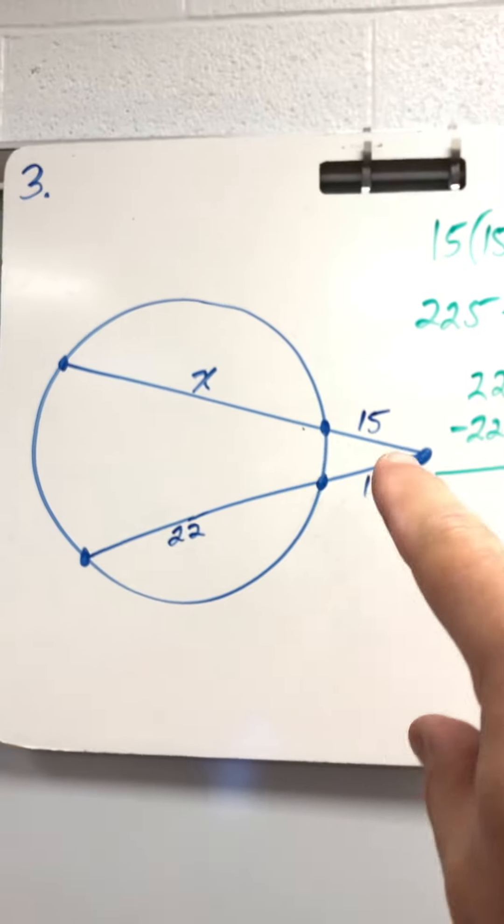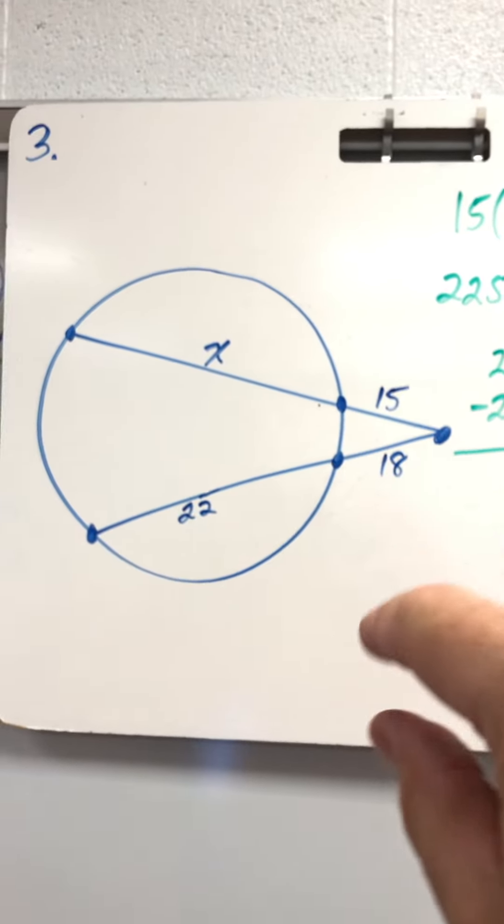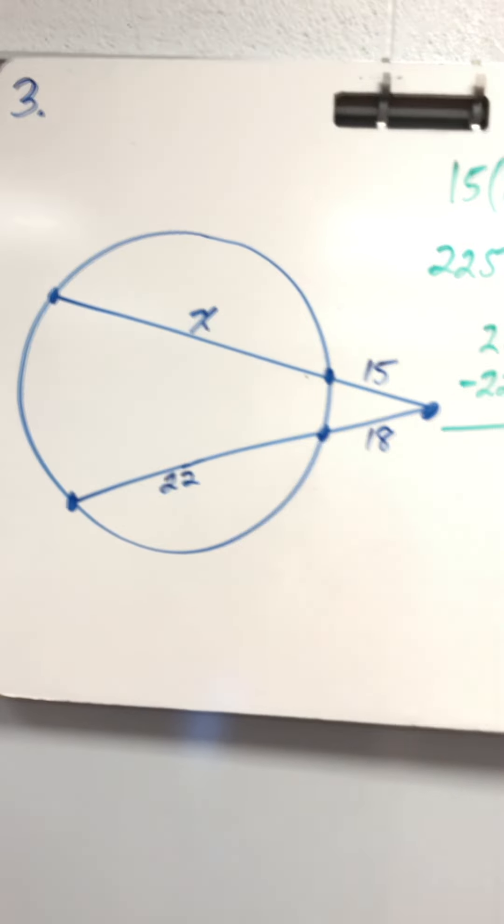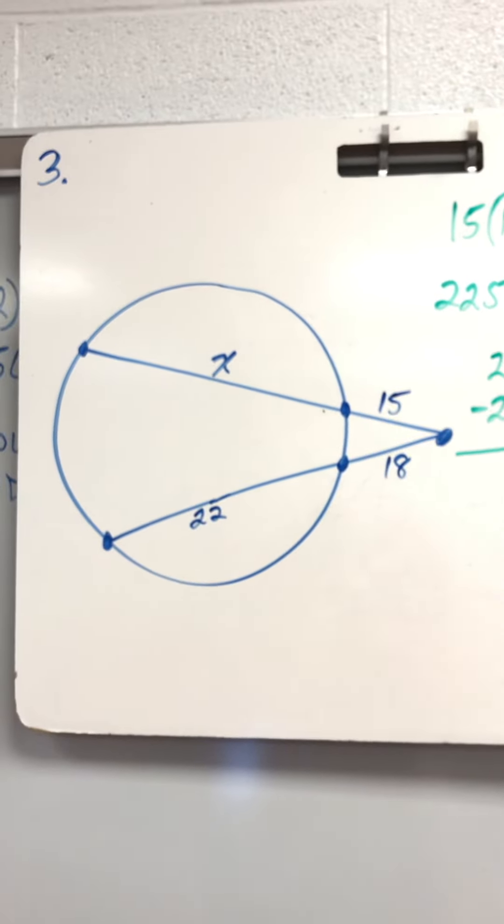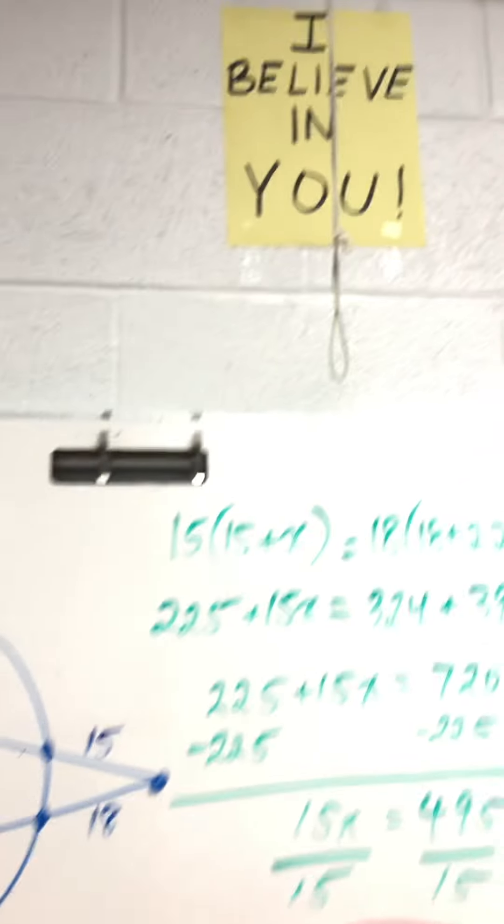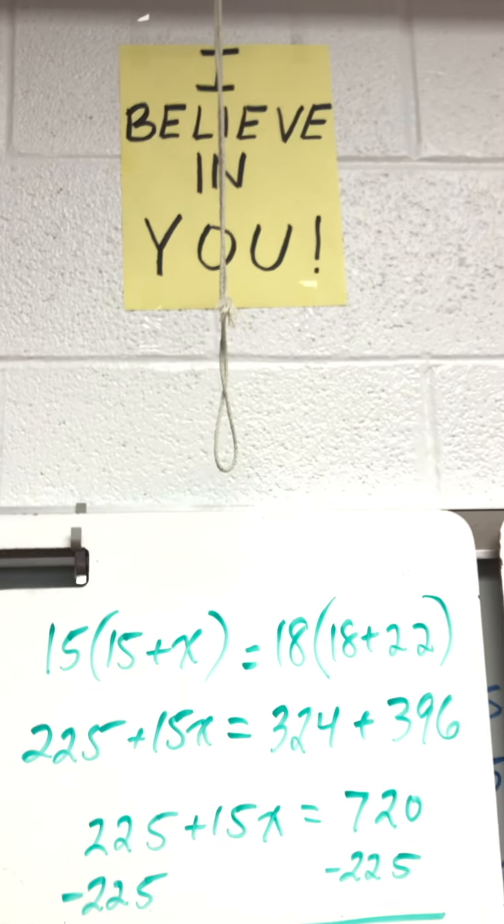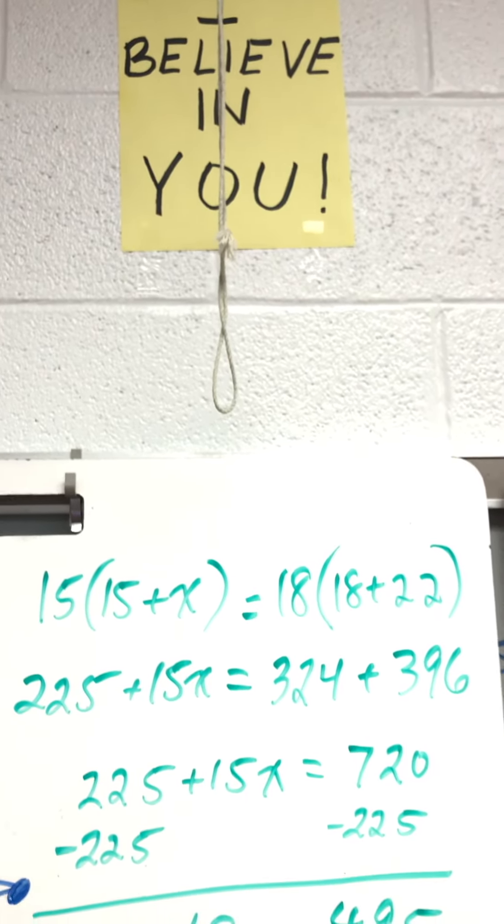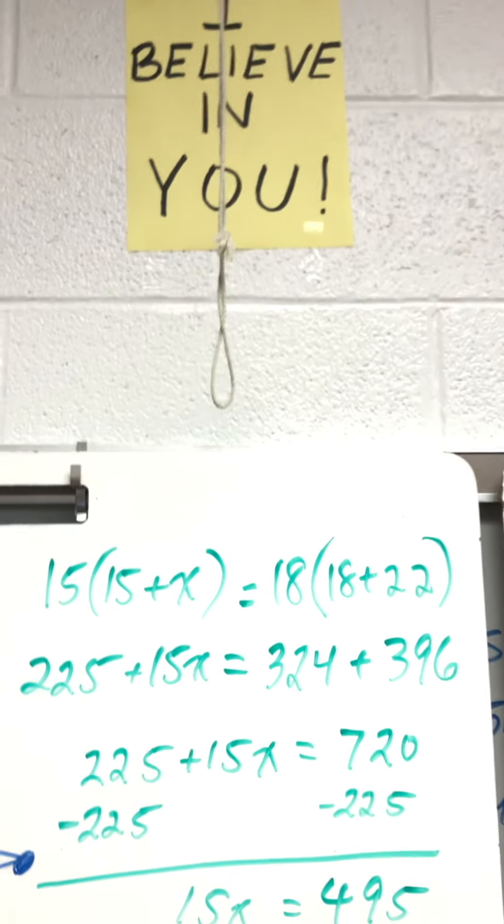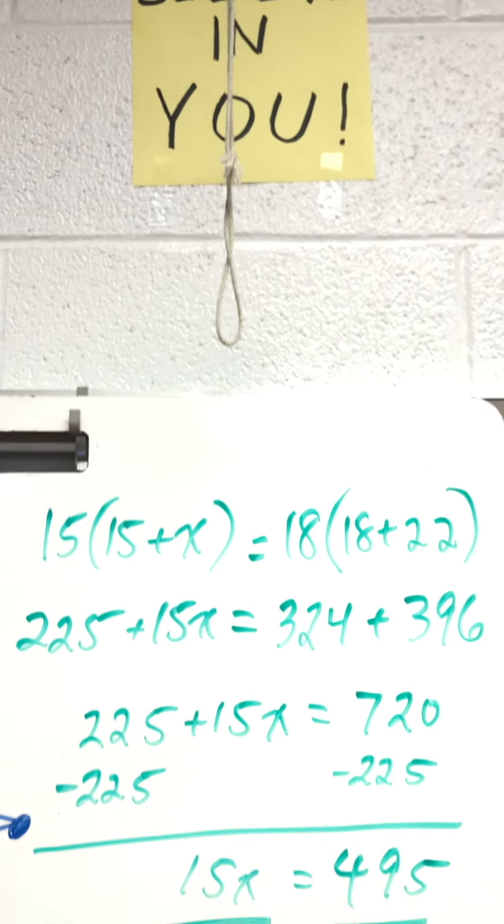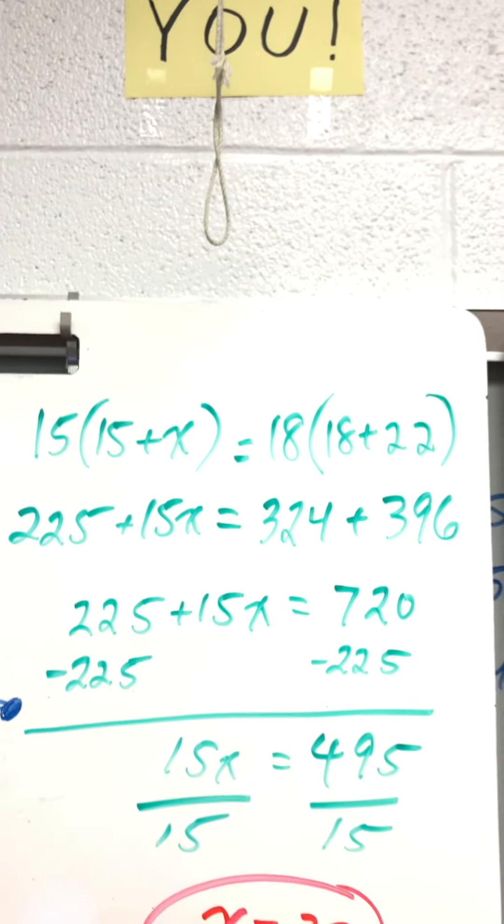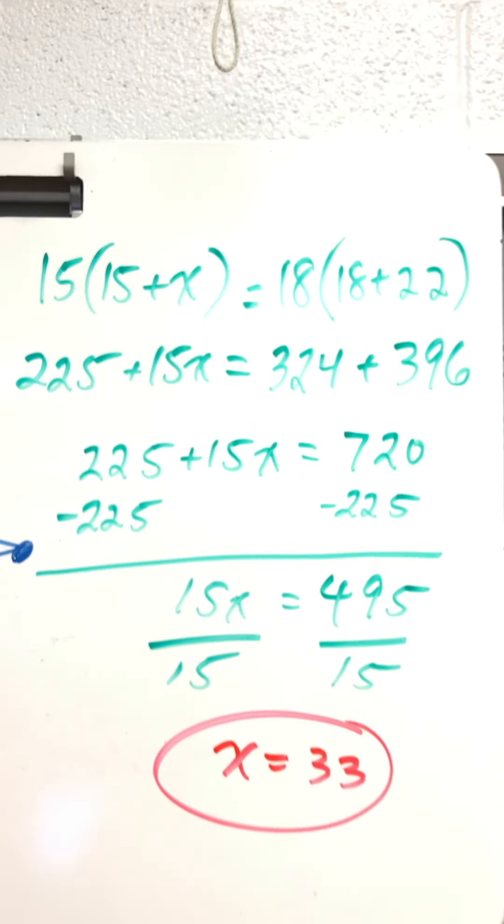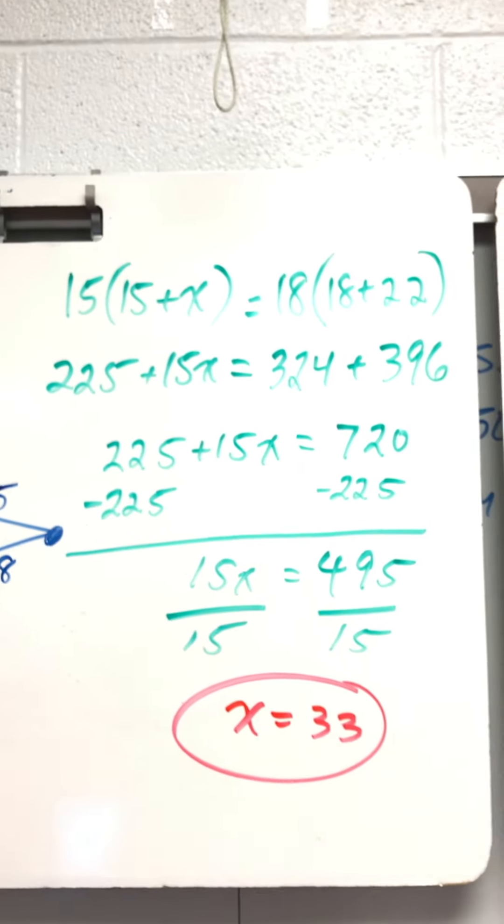Over here, 15 times 15 plus X equals 18 times 18 plus 22. Distribute both. Subtract 225 from both sides. 15X equals 495. Divide by 15. X equals 33.